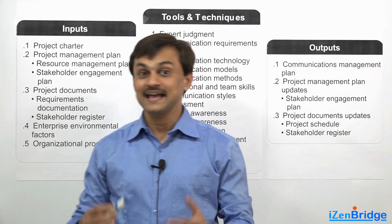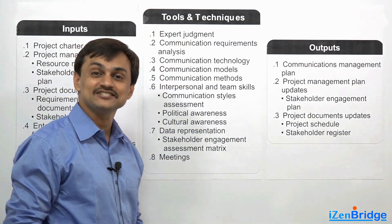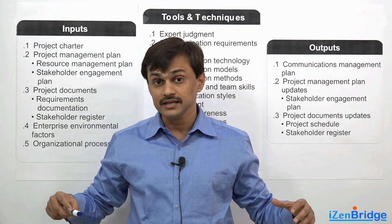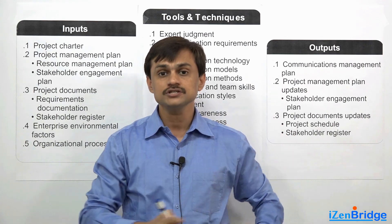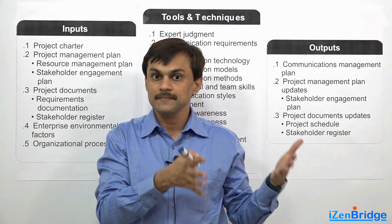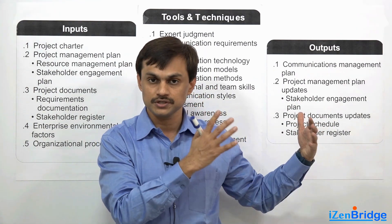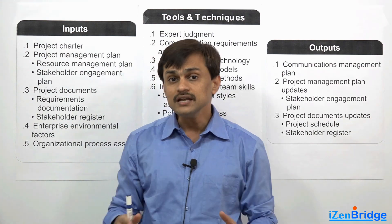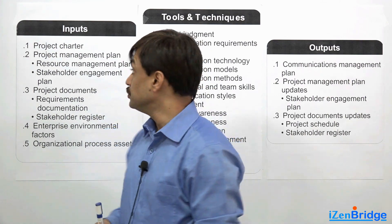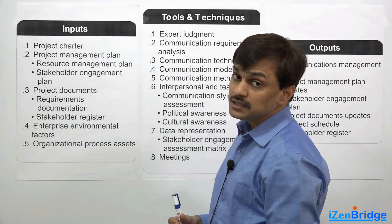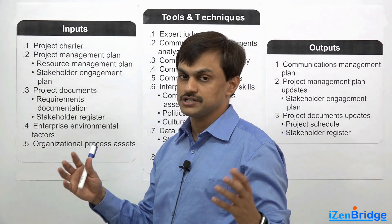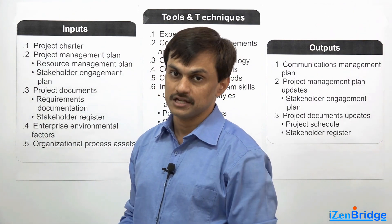We can't finish talking about any process without discussing its inputs, tools and techniques, and outputs. In the project communication management knowledge area, we looked at three processes: one process gives us a communication management plan, then we manage communication using the managed communication process, and control it using the controlled communication process. Right now I am getting into the details of inputs, tools and techniques, and outputs of the plan communication management process. As usual, this process gives us a plan — the communication management plan — which guides the rest of the processes in the knowledge area.